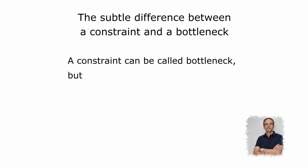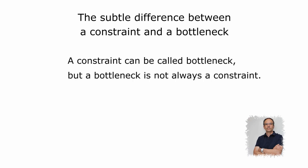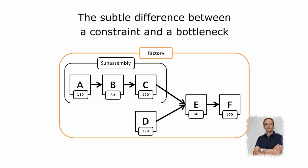A constraint can be called a bottleneck, but a bottleneck is not always a constraint. Let's take an example of a plant with a sub-assembly workshop using resources A, B, and C.